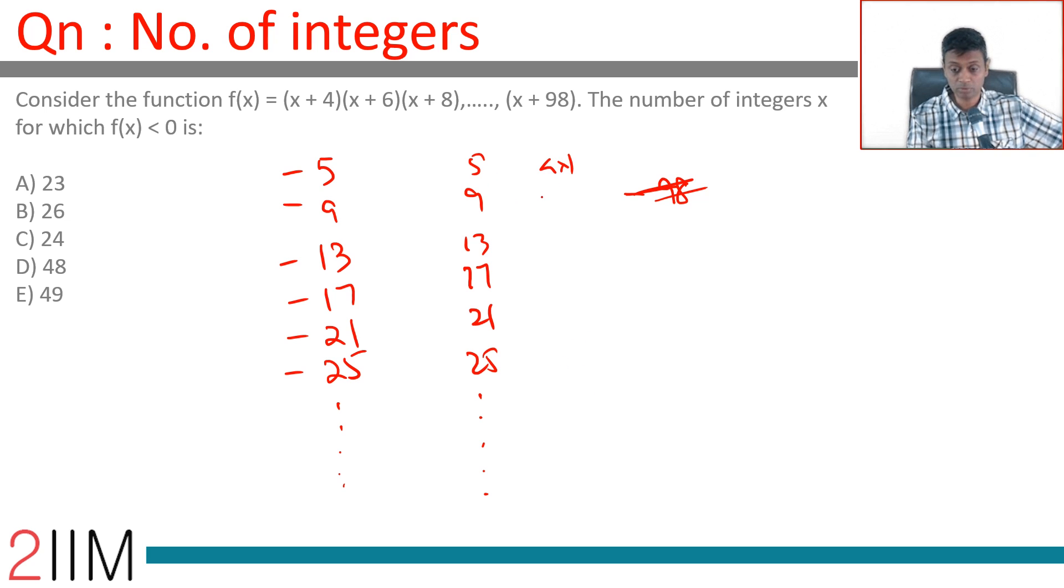Each of these numbers is a multiple of 4 plus 1: 12 plus 1, 16 plus 1, 20 plus 1, or we can go till 97 which is 96 plus 1. 4 into 1 plus 1, 4 into 2 plus 1, 4 into 3 plus 1, all the way to 4 into 24 plus 1.